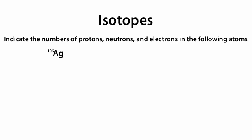Next, we're going to talk about isotopes. The same problem follows: indicate the numbers of protons, neutrons, and electrons of the following atoms. The first atom we're given is Ag-106. Ag is still silver. Silver has an atomic number of 47, so the number of protons in Ag-106 is 47. The atomic mass is 106, and the number of neutrons is 106 minus 47, which equals 59. The number of electrons is still equal to the number of protons, which is 47.